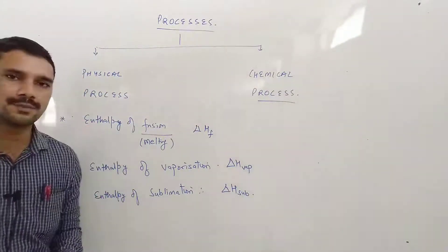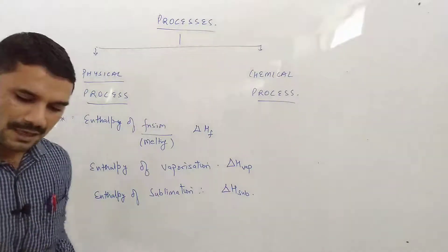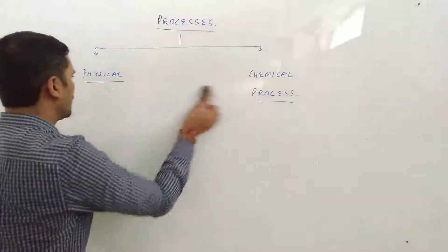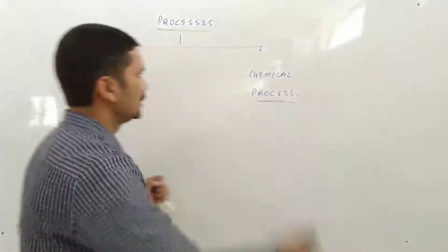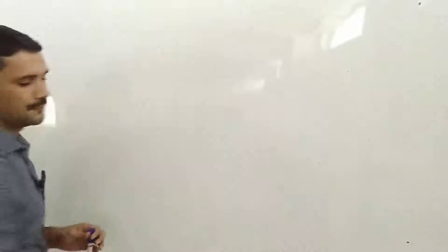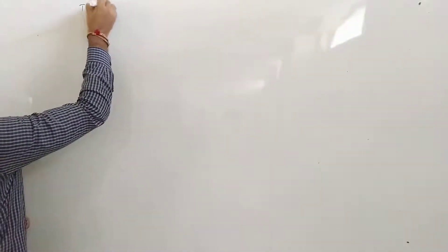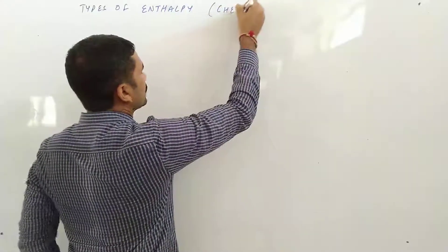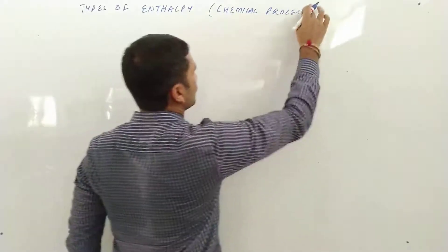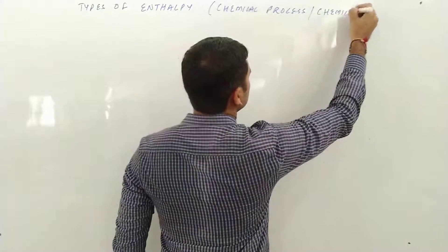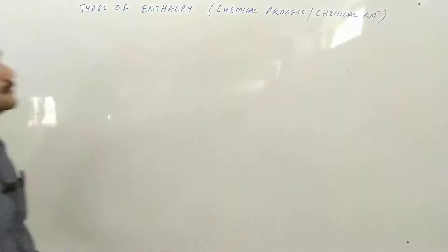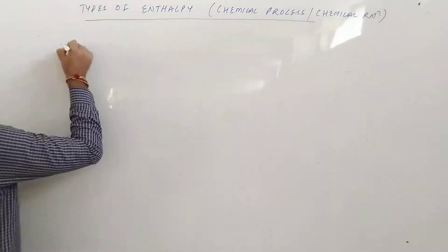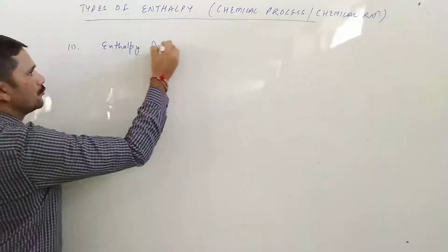So these are the three different types of enthalpies on the basis of physical process. Aaj hum padhne wale hain types of enthalpies on the basis of chemical reaction. Chemical reaction kahaan padhi jaati hai — chemical process mein. To aaj ka hamara topic hai types of enthalpy on the basis of different types of chemical reactions, ya phir on the basis of chemical process. Sabse pehle aa jaati hai enthalpy of combustion.